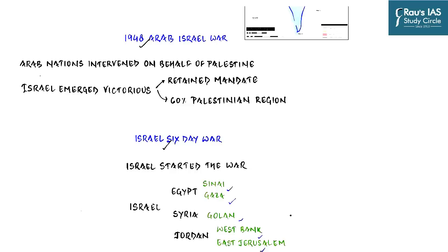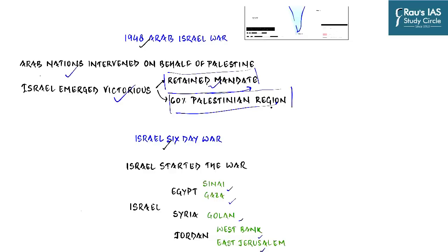In 1948, following the declaration of the State of Israel, the Arab League ordered troops into areas of Palestine given to Jews. The war was prolonged but Israel emerged victorious — it not only retained its mandated territory under the UN resolution but also captured around 60 percent of the territory allocated to the Arabs. For the next 10 to 15 years things remained roughly the same, until 1967.